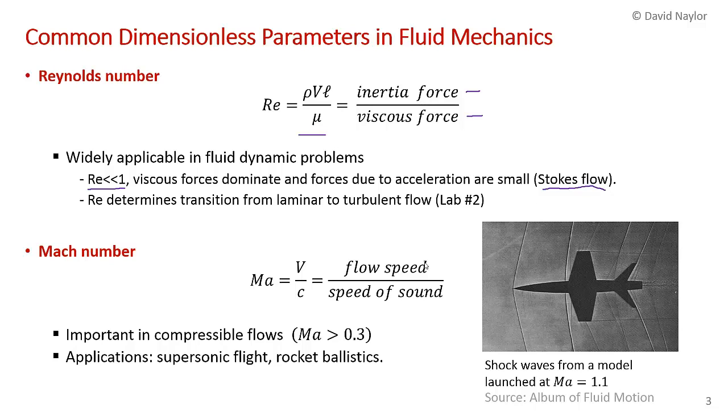Then in lab number two, you saw that the Reynolds number determines transition from laminar to turbulent flow in a pipe. This has some big implications for the heat transfer in the pipe and the pressure loss. So you've seen Reynolds number.